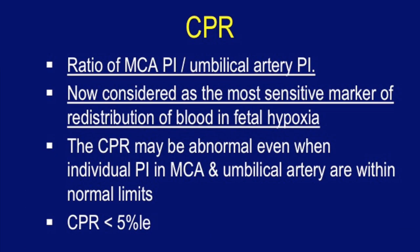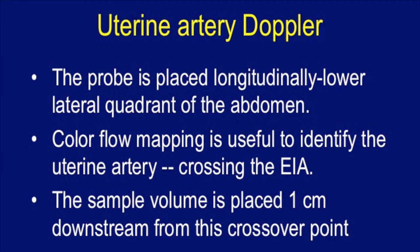Another important parameter is the cerebroplacental ratio (CPR), which is the ratio of MCA PI to umbilical artery PI. It is now considered the most sensitive marker for redistribution of blood in fetal hypoxia. The CPR may be abnormal even when individual PI values for MCA and umbilical artery are within normal limits. A CPR below the 5th percentile is considered abnormal.